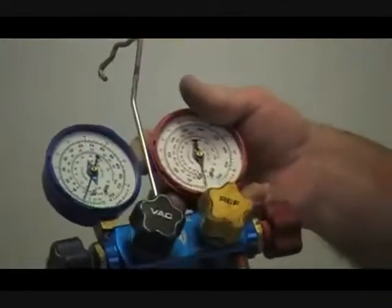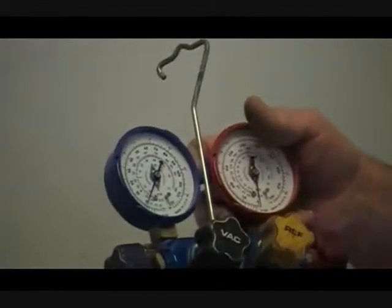When you take a look at these, you'll see that this low pressure gauge, which is the blue one, has a maximum pressure of 250 pounds. Here, it's 500 pounds, actually readable 300.